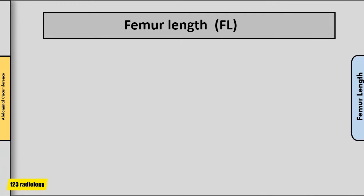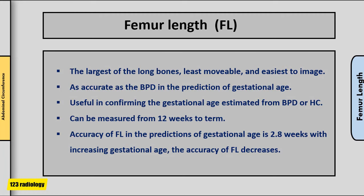All fetal long bones can be examined and measured by ultrasound; however, the femur is the largest, least movable, and easiest to image. Femur length measurement is as accurate as biparietal diameter in the prediction of gestational age, and is useful in confirming gestational age when fetal position prevents measurement of biparietal diameter or head circumference. However, measurement of femur length should not replace biparietal diameter or head circumference as the sole predictor of gestational age. The femur can be measured from 12 weeks to term, with accuracy of 2.8 weeks, decreasing with advancing gestational age.